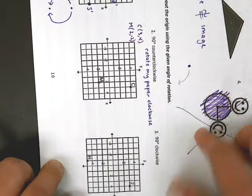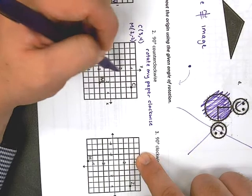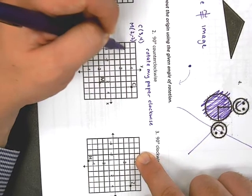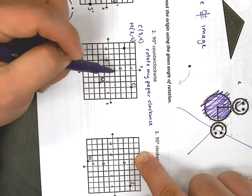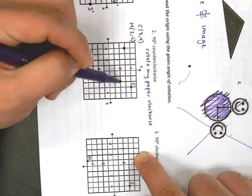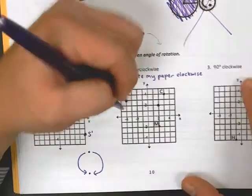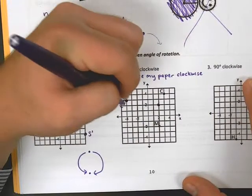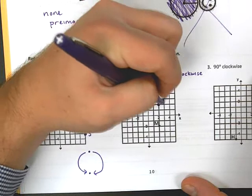C is at 3, 4 so here's my origin. 1, 2, 3, 1, 2, 3, 4. And M is at 2, negative 2. So, origin, positive 2, negative 2. There we go. We rotate back to normal and we label. This was my image of C, so C prime. And this was my image of M, so M prime.